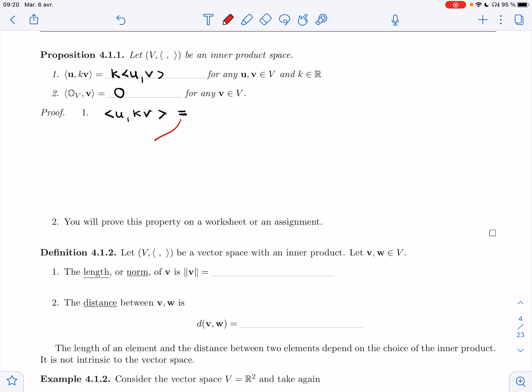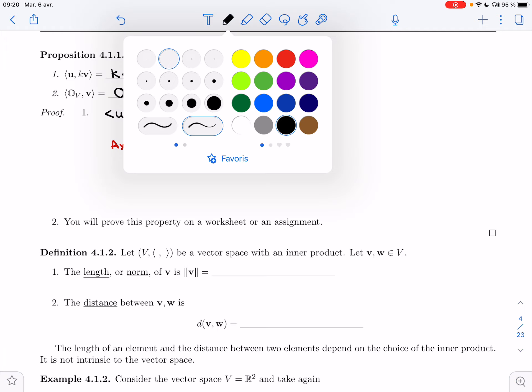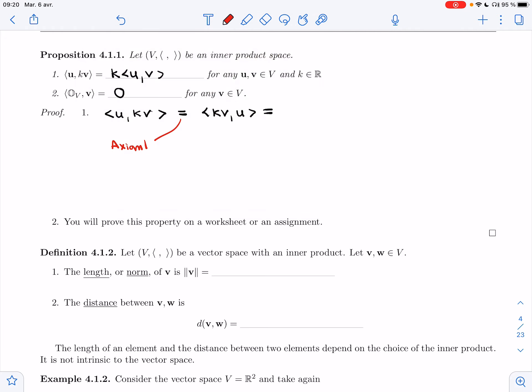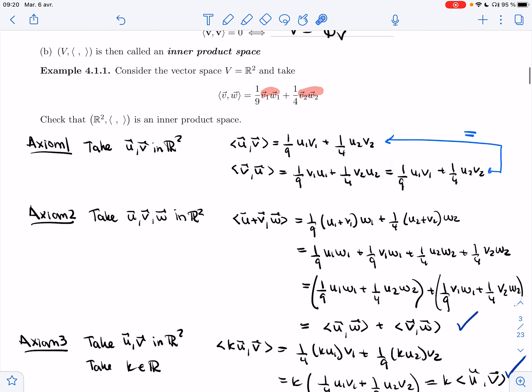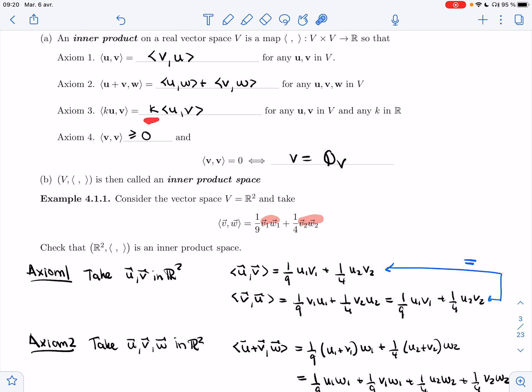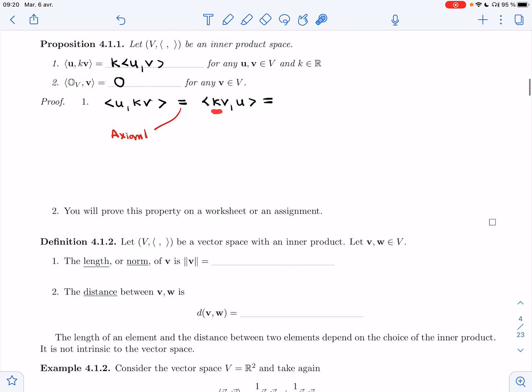First thing I'm going to do is use axiom 1, the one about commutativity, and I'm going to switch the two vectors, the two elements in my dot product. Now that the k is on the first, I can pull it out. So that's axiom 3.